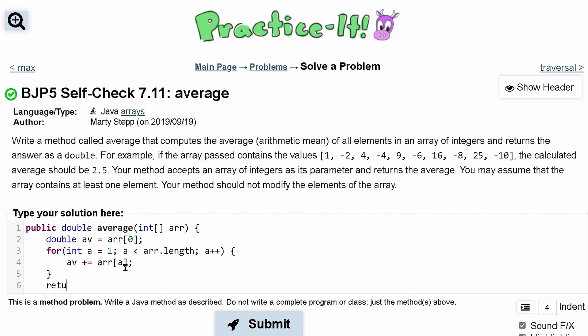Then we want to return our av. It's not that simple though, because remember it's asking for the mean, and the mean is you add all these up and divide by how many there are. So we're going to do av divided by arr.length.